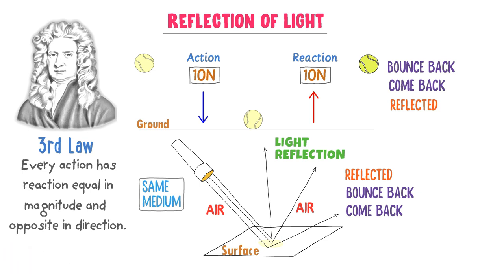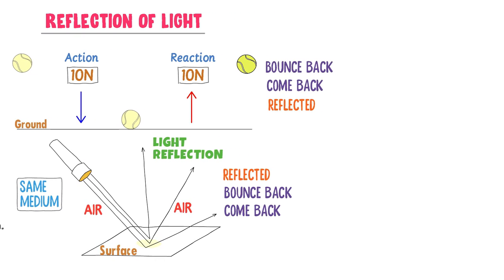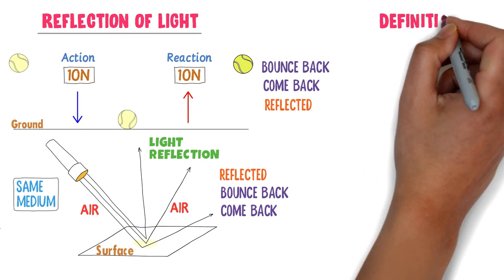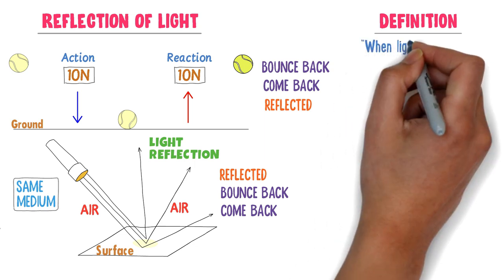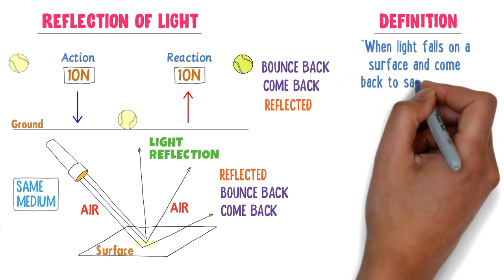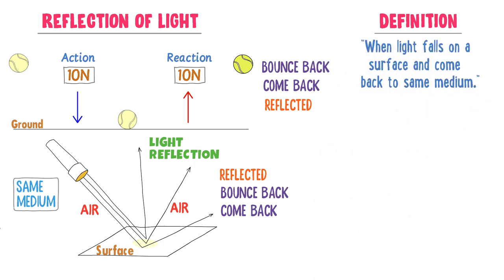Remember that when a ball hits a ground or any surface, it is reflected. Similarly, when a light ray hits a ground or any surface, it is reflected. The easy definition of reflection: when light falls on a surface and comes back into the same medium, it is called reflection of light.